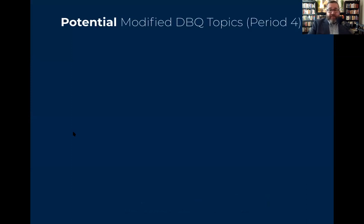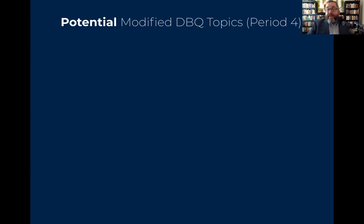I'd like to take a look at potential DBQ topics for Period 4. Remember, the AP exam is going to be modified. Looking back at Period 3, we said it could be the French and Indian War or the subsequent revenue acts that followed to pay for Britain's debt. We could have the American Revolution itself as a potential DBQ topic, the Articles of Confederation and ratification of the Constitution, or even the early growing pains of a new nation — the French and British foreign entanglements, along with the Barbary Wars and Jeffersonian ideals.